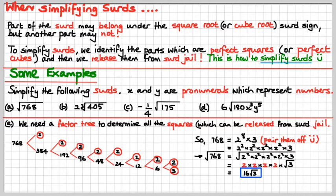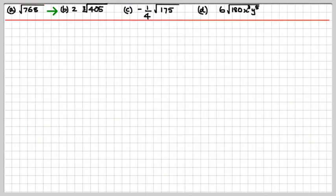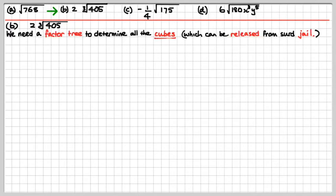We're going to do the next one now — this one's a cube root one, better be careful. It's 2 times the cube root of 405. We need a factor tree to determine all the cubes. Because the cube root of 2 cubed would be 2, we have to bunch them up in 3s, or cubes, to get them out of cube root jail.